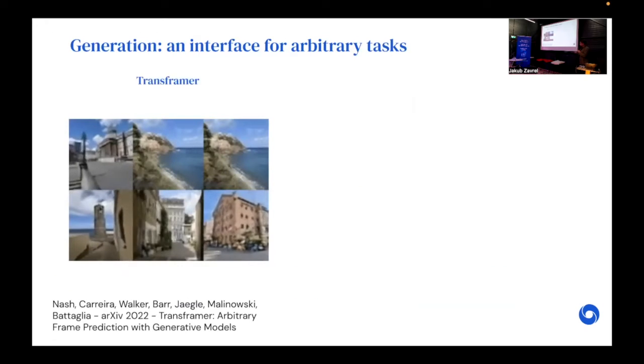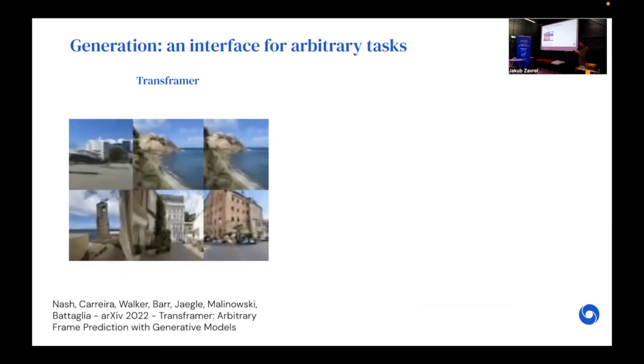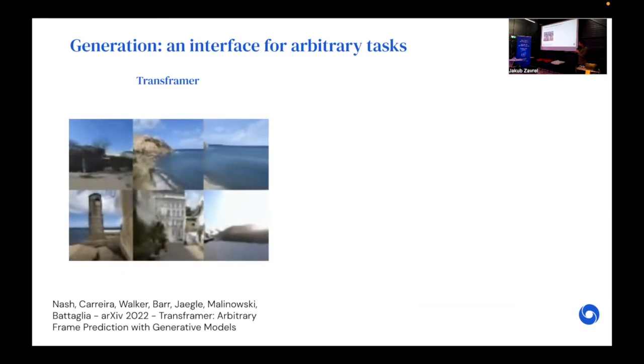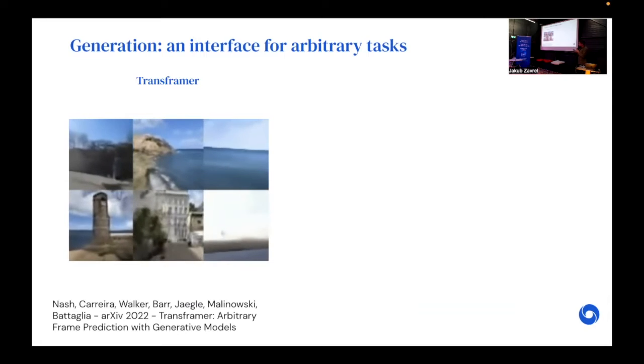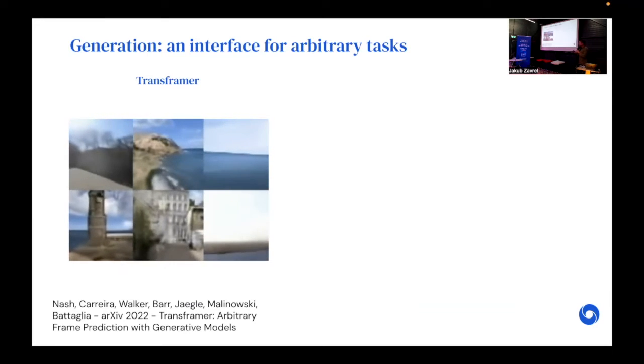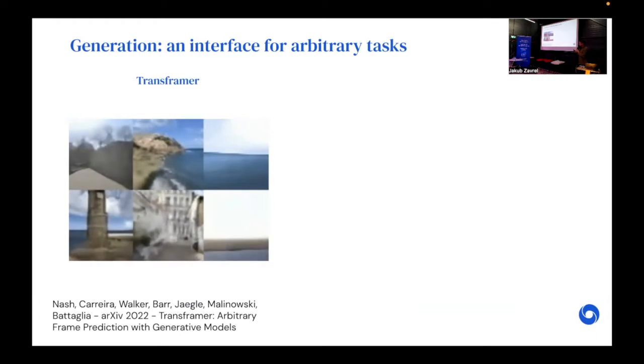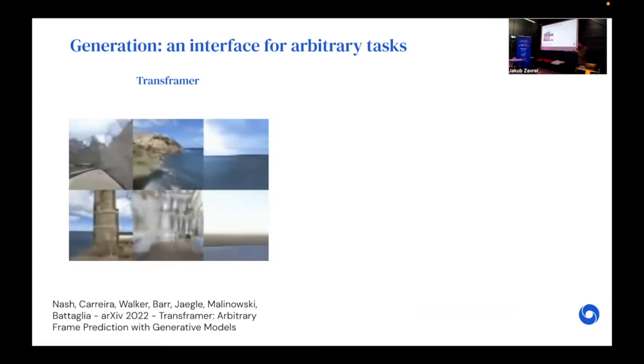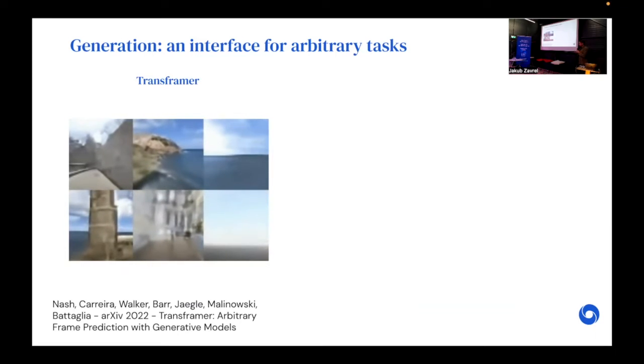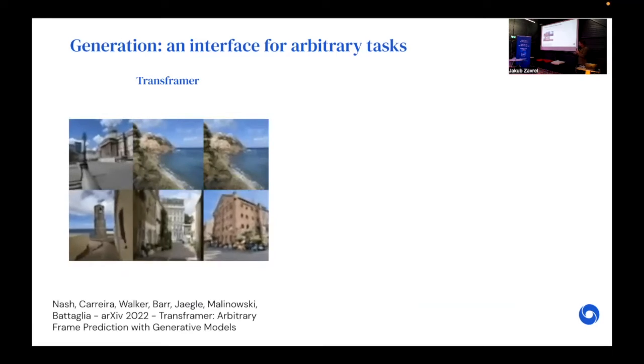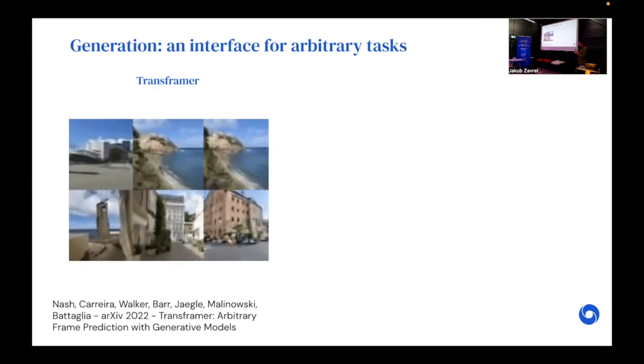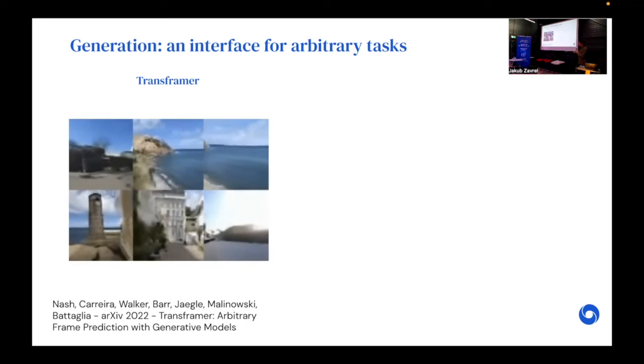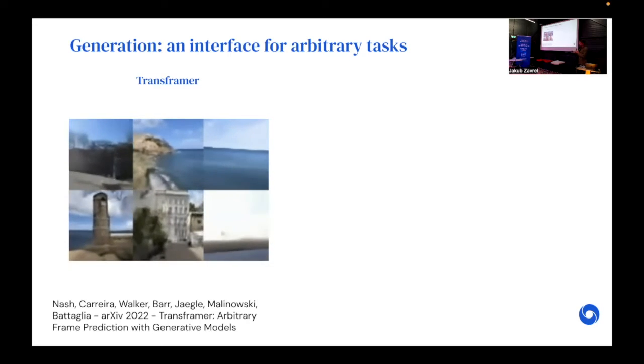So why do we care about generation? I think the way to think about this is in terms of task generality. To give you a sense of why task generality is a good thing to think about, I'm going to be highlighting two works here. The first is this work on Transframer, which was led by Charlie Nash at DeepMind. Basically, what we developed here was a unit architecture to encode images and then a single transformer decoder that could be used for 30 second long video prediction, the results of which are shown here, but also on a variety of different tasks including image classification, segmentation, and detection with the same encoder decoder structure. All we had to change to apply it to different tasks was the input data and the loss. Otherwise, it's exactly the same architecture and it works well on a variety of different tasks.